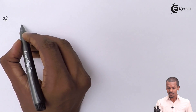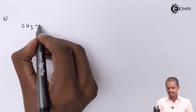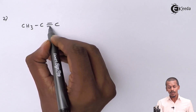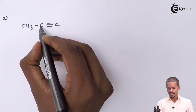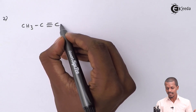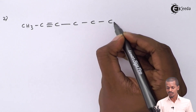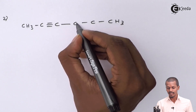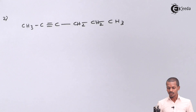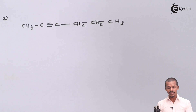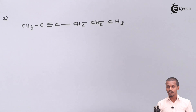The structural formula of the second isomer is CH3-C≡C-CH2-CH2-CH3, with the triple bond between C2 and C3. Three carbon atoms follow after the triple bond, with the last one being CH3 and the inner one CH2. This represents the second isomer for C6H10.